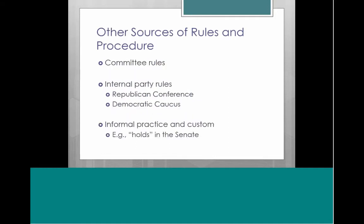A few other things to be aware of are committee rules — each of the committees have their own rules of procedure. There are also internal party rules, such as the rules of the Republican Conference or the Democratic Caucus, governing things like how they elect their party leaders — the whip, the Speaker, the majority leader. These aren't officially published, but you can often find them online.